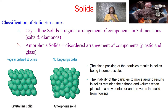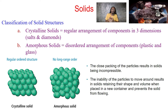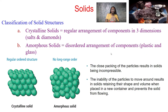Now, solids are different from liquids and gases in a couple of key ways. Solids keep their shape — they don't take the shape of a container like liquids or gases do. They also keep their volume, similar to liquids. So the key things about solids: they keep their volume and their shape.